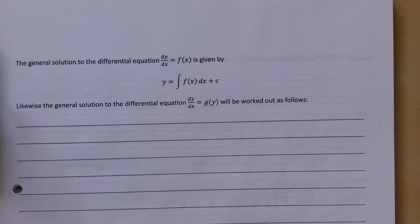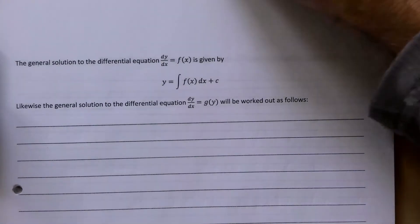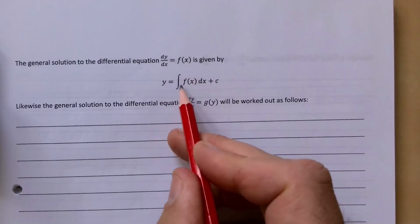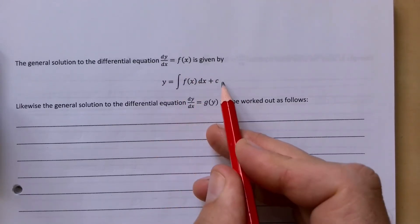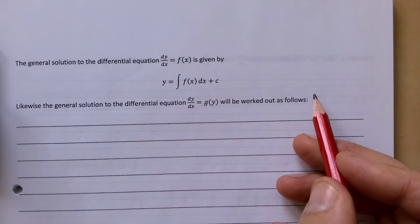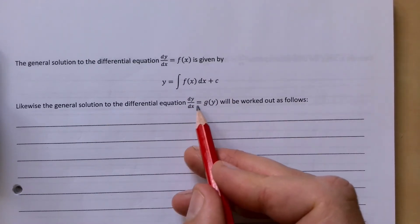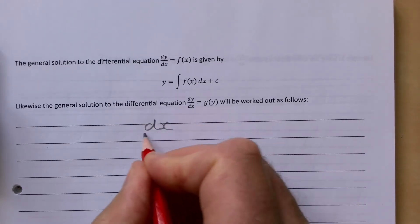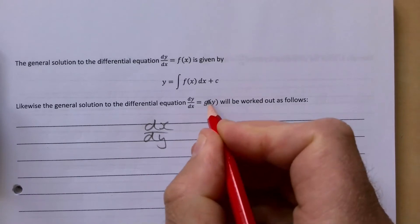dy/dx = f(x) is given by y = ∫f(x)dx. Likewise, the general solution to dy/dx = g(y) will be worked out as follows. We have dy/dx = g(y), that means dx/dy, because g(y) is a function of y, of course,